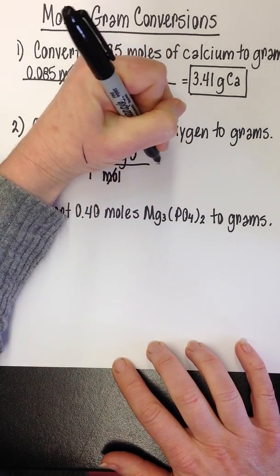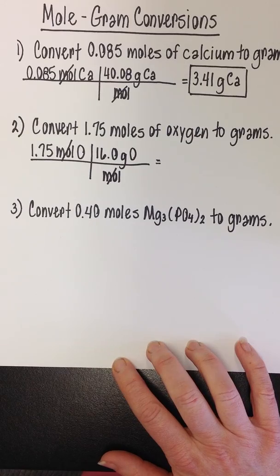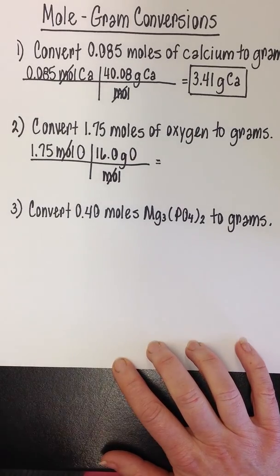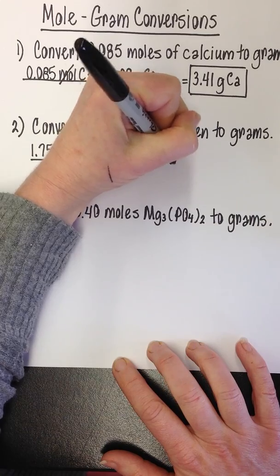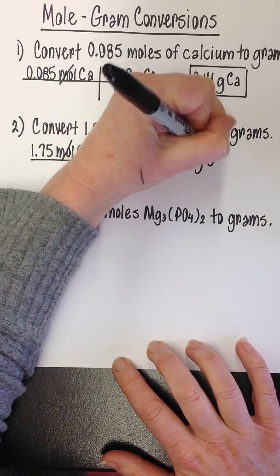I want to remind you that the number always goes with gram when you're looking at molar mass because it's that mass of that element per one mole. So we're going to multiply everything on the top together. And 1.75 multiplied by 16 is going to give you 28 grams of oxygen.